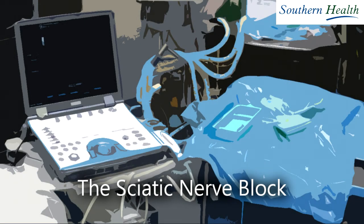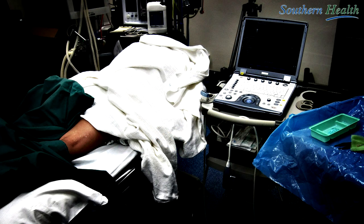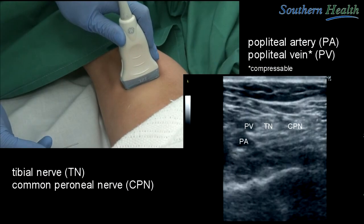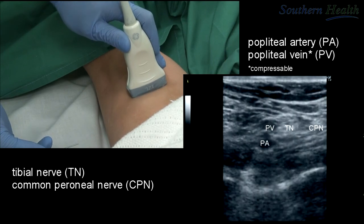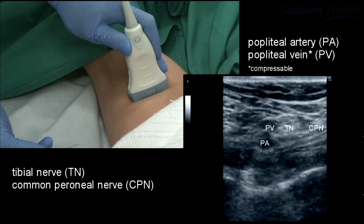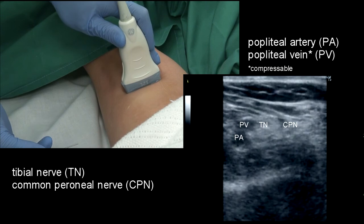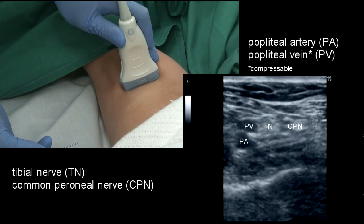The sciatic nerve block. This demonstration is for a right-sided sciatic nerve block. The patient is positioned prone. Identify the structures in the popliteal region.